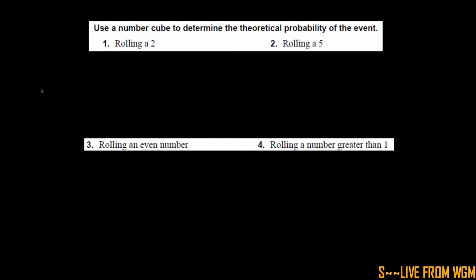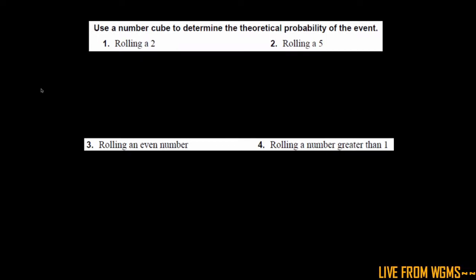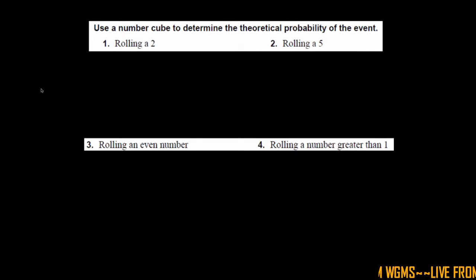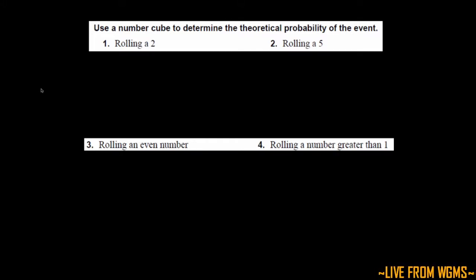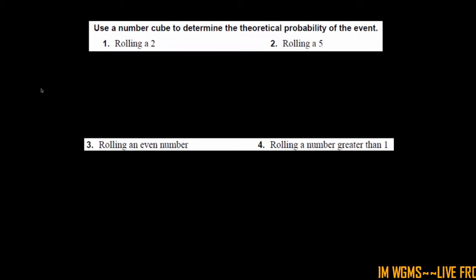How many total possible outcomes are there? Meaning how many sides are on this number cube? Six. I have one, two, three, four, five, and six. So there's a total of six sides.